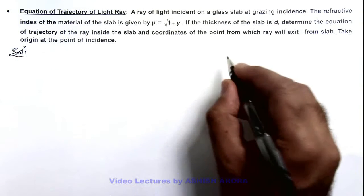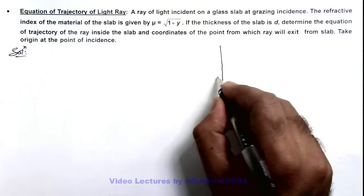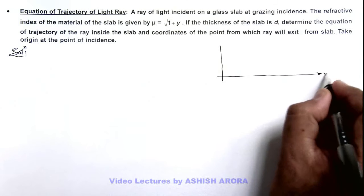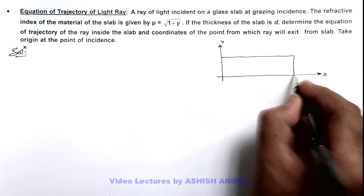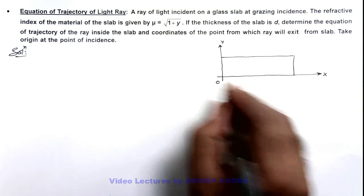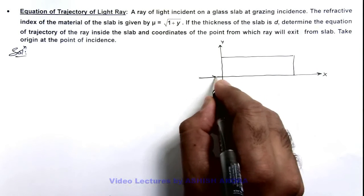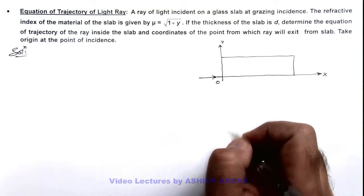Here if we draw the picture for this glass slab, you can see this is x-y coordinate system and we place large glass slab over here. So from origin a light ray incidence onto it, grazing incidence form like this. This is the incident ray.